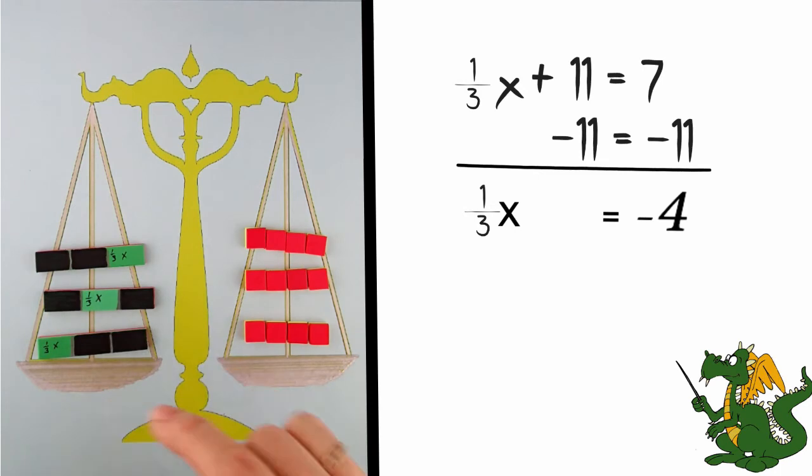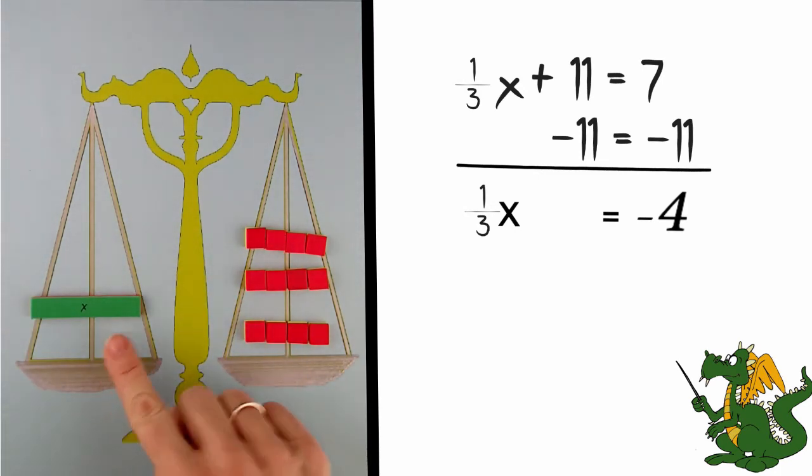Well, 3 thirds is the same thing as 1. So 1x is equal to negative 12.